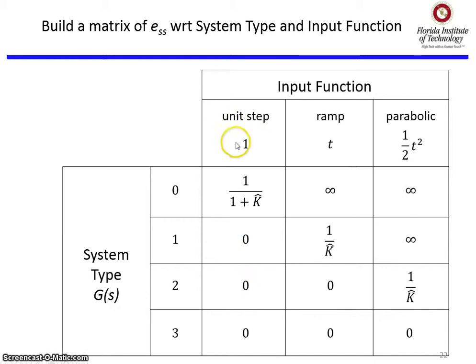if your system gets a lot of unit steps and needs to track unit steps, you probably want to pick type 1 system or higher to get steady-state error. Or, if you only have a type 0 system, then you want to make k-hat really large so that the steady-state error is small.